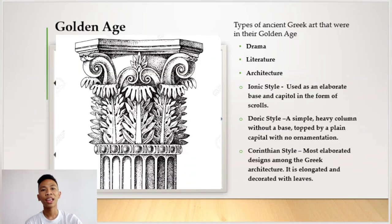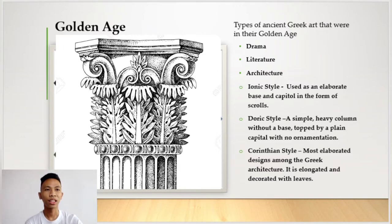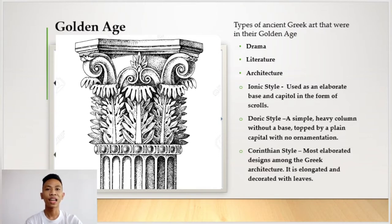The third is the Corinthian style. It is the most elaborate design among the Greek architectural styles. It is elongated and decorated with leaves. Among the three types of design, the Corinthian style is the most decorative, decorated with elongated different styles of leaves.